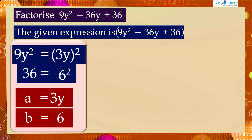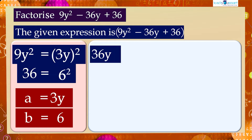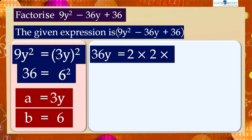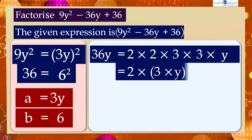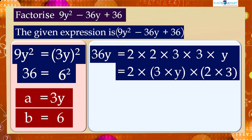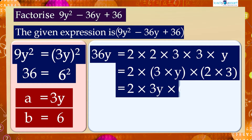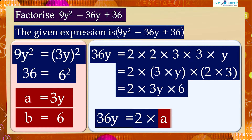Now we have to check whether the middle term can be expressed in terms of a and b. We can write the middle term 36y as: 36y equals 2 × 2 × 3 × 3 × y, which equals 2 × 3y × 6, which is equal to 2 × a × b.